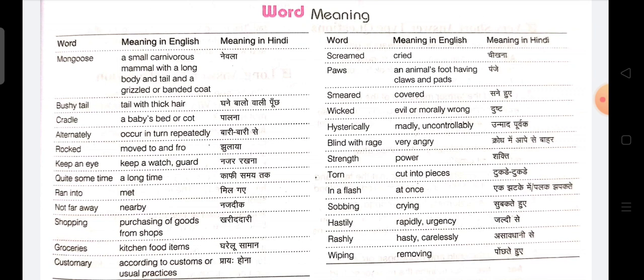First word is mongoose. Mongoose — a small carnivorous mammal with a long body and tail, a grizzled and banded coat.